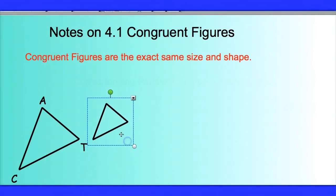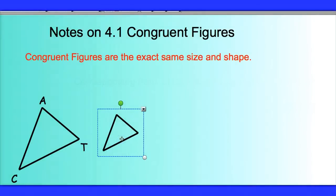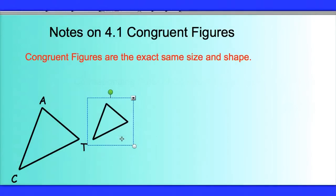Notice here, I've actually shrunk the triangle. This triangle is still the same shape, but it's not the exact same size. So these two triangles are not congruent, they're only what are called similar.